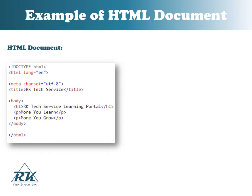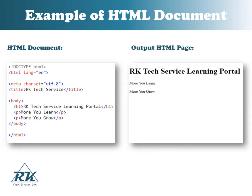The body element contains the visible page content. The h1 element defines a large heading. The p element defines a paragraph. This is the output of the displayed HTML document.